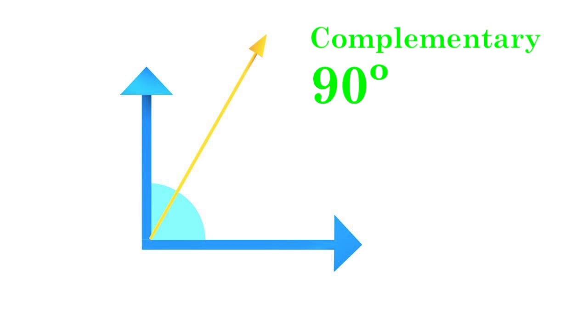So, for example, if you know this angle is 60 degrees, then if you subtract 60 degrees from 90 degrees, you can find the other angle, which is 30 degrees.